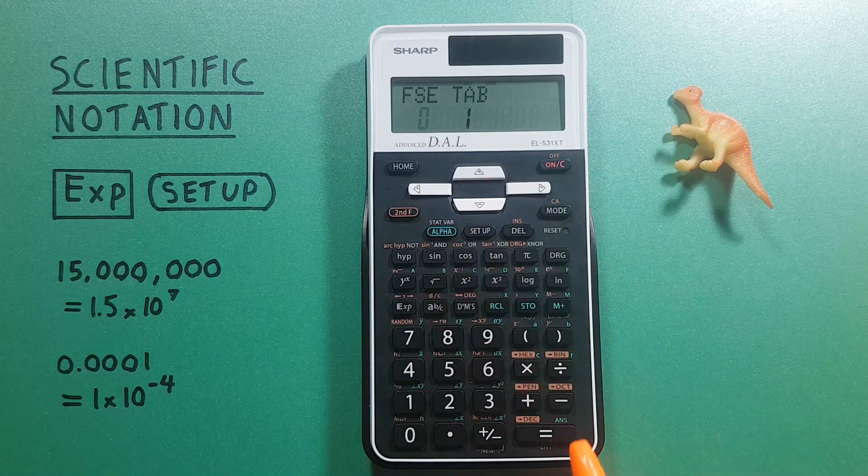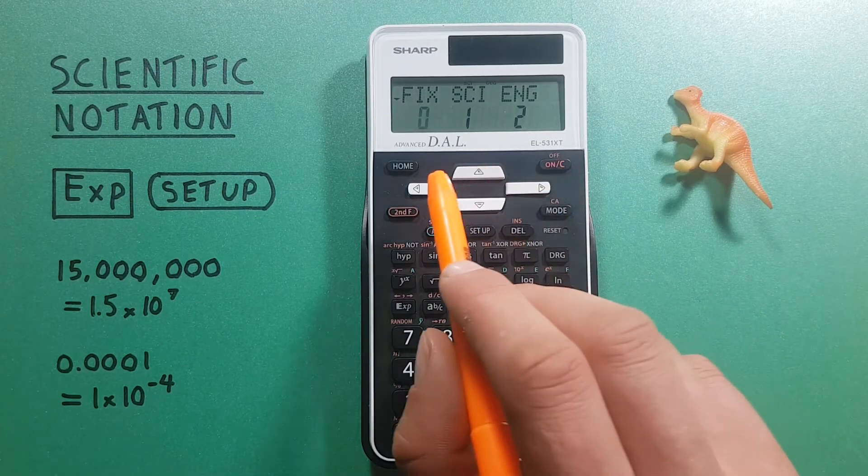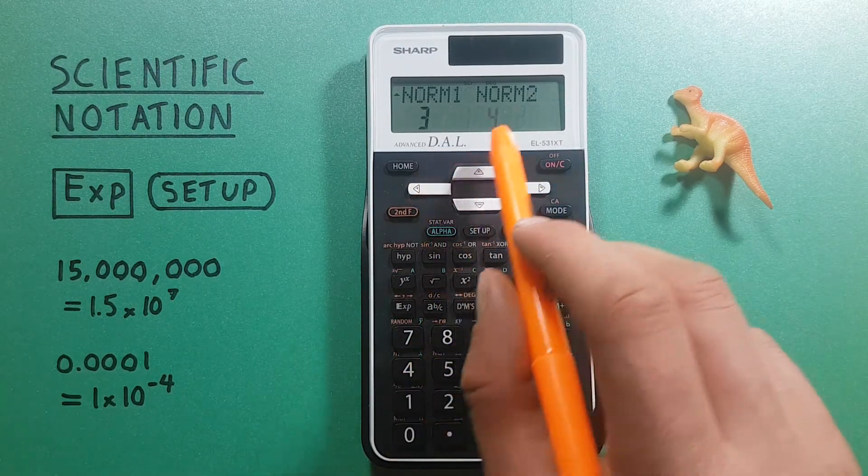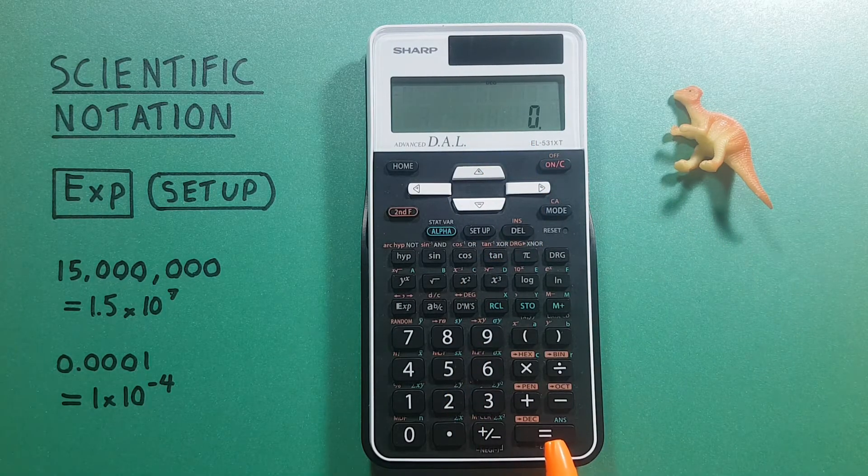We can also choose a different mode for scientific notation. If we go to the left 1 and select normal 2 mode or number 4, press enter.